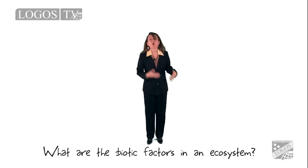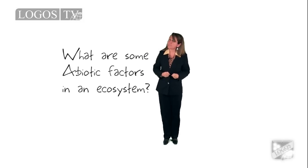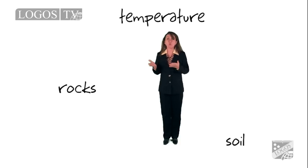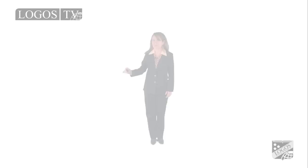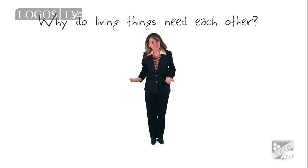I am sure you are going to remember very well what biotic and abiotic factors are and their importance in an ecosystem. Now let's see if you remember. What are biotic factors in ecosystems? Biotic factors are the living parts of the ecosystem. What are some of the abiotic factors we find in ecosystems? Well, there are many, but some are rocks, soil, temperature, wind, and water. Why do living things need each other? Because they protect themselves, they reproduce, and they eat each other.